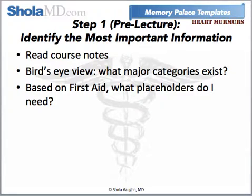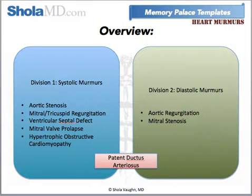As part of the first step of my study strategy, I read the course notes before lecture. I created flashcards as I read using Anki, and I did this as I read through the very first time when everything was novel and fresh. Based on the lecture notes, I thought about the broad categories that naturally separate the material, and then based on First Aid, I created placeholders. In thinking about heart murmurs, there are two major divisions: systolic murmurs and diastolic murmurs. Now every school's curriculum is different, so there may be things that fit into this category that your professor has decided to leave out of his or her lecture.